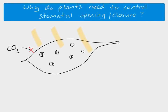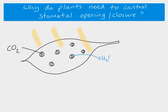So the stomata now we can see they're open, which means that we've got a guard cell, another guard cell, and then this bit here — that's the hole in the middle. So carbon dioxide can go in, but it also means water is able to come out.